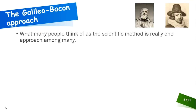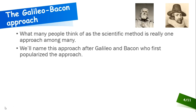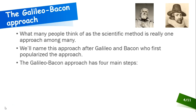Galileo and Bacon were each proponents of this generalized approach to understanding the world around us. This is what many people think of as the scientific method, but it's really one approach among many. So we're going to name this approach after Galileo and Bacon, because they were the first ones to popularize the thinking behind the approach — that idea that experience should rule the day. There are four main steps to this approach, which we've already gone over, but let's go over them again.